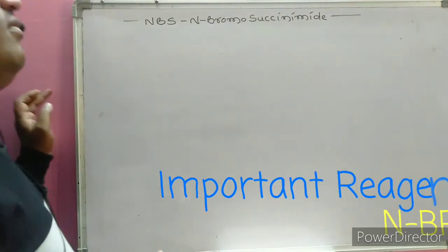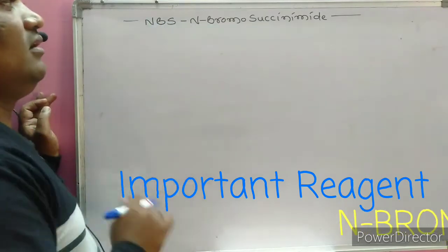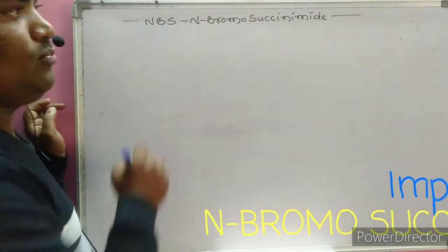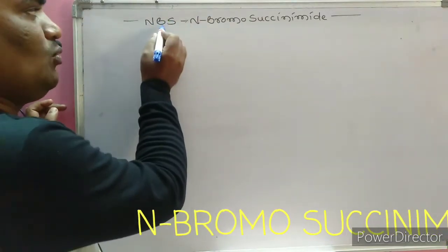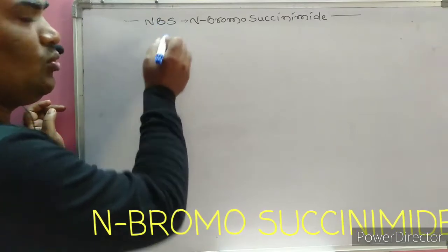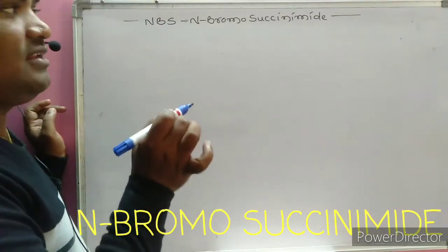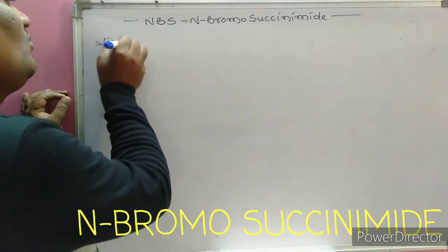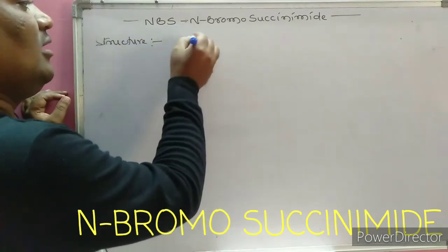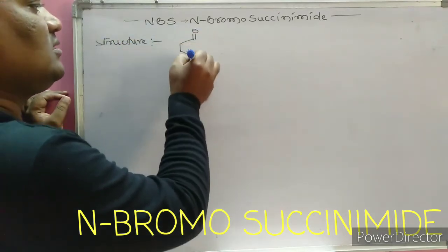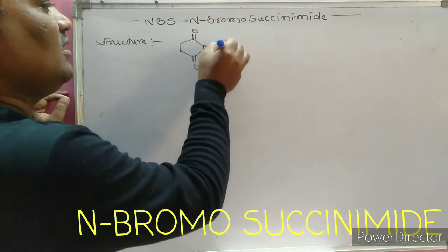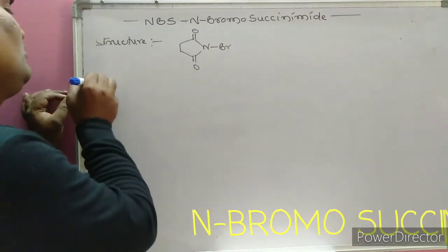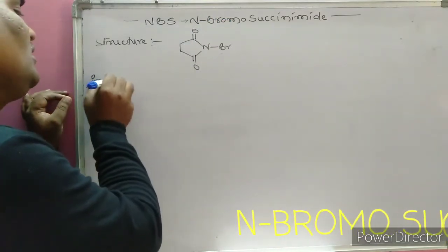Hello friends, welcome to my YouTube channel. Today's important reagent is NBS, the abbreviation for N-Bromosuccinimide. The structure of NBS shows a C double bond O, N, and Br. The bromine is present on the nitrogen atom, hence it is called N-Bromosuccinimide.